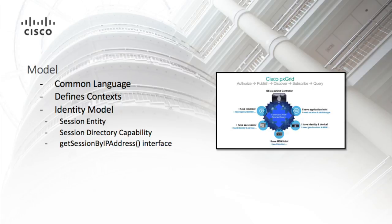For example, Cisco has created the identity model for the network security communication space. It defines various entities and establishes what these entities contain and how to interact with them. The identity model defines the session entity that contains information like a user and one or more posture assessments. It also defines session directory capability. This capability relates to session logins on a network. The get session by IP address method serves as an interface to this model.